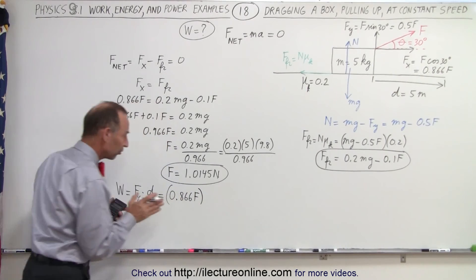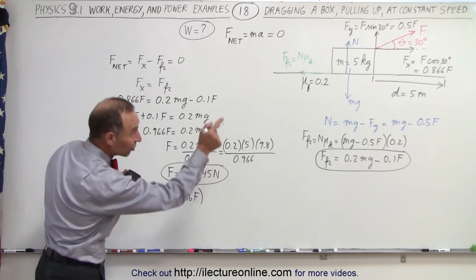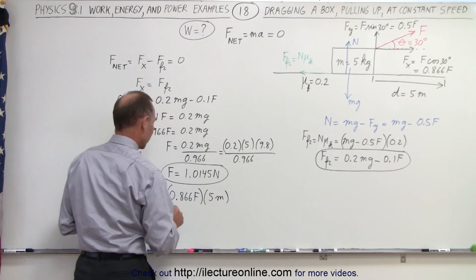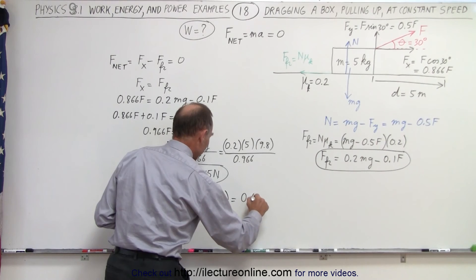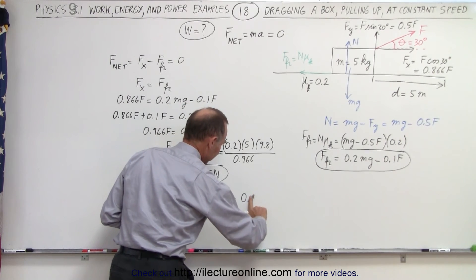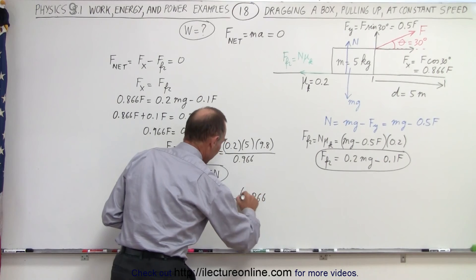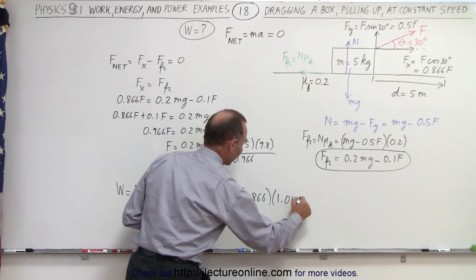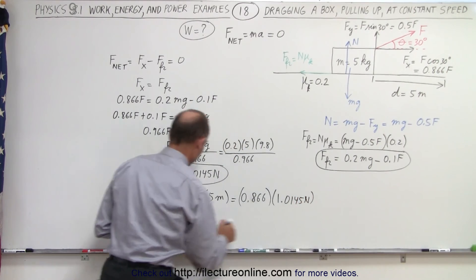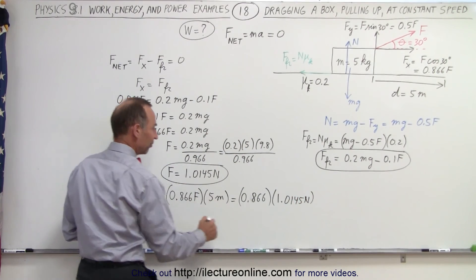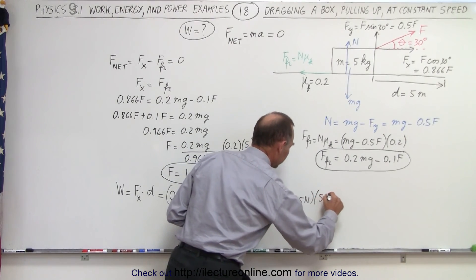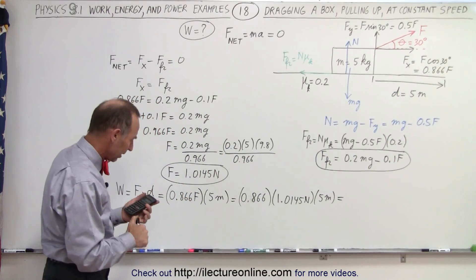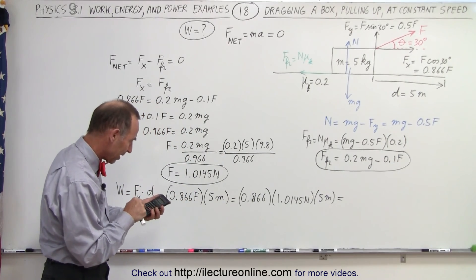So in this case this is 0.866 multiplied times f, which is 1.0145 newtons. So that is 0.866 times the force times 5 meters. Notice the units are going to be newton meters, which is equal to joules.